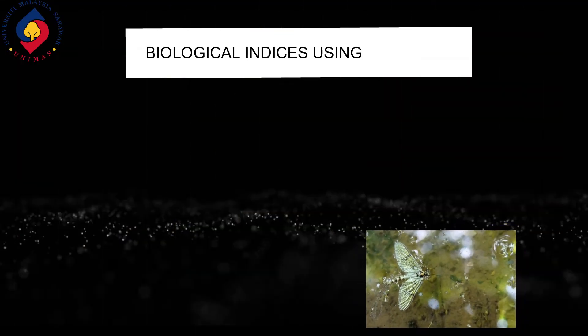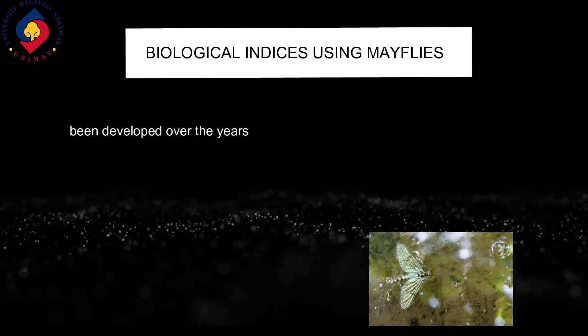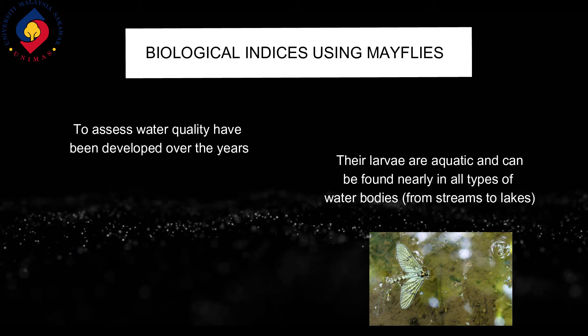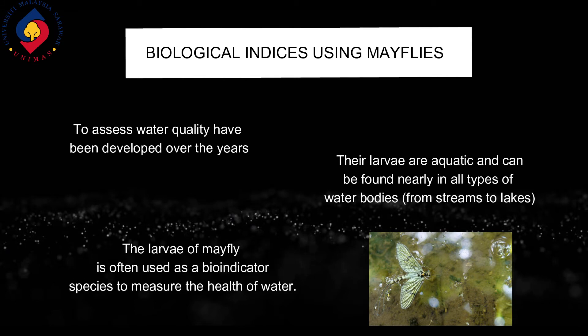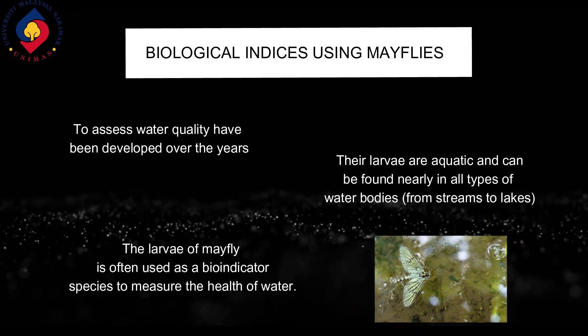Biological indices using mayfly to assess water quality have been developed over the years. Their larvae are aquatic and can be found in nearly all types of water bodies, from streams to lakes. The larvae of mayfly are often used as a bioindicator species to measure the health of water.